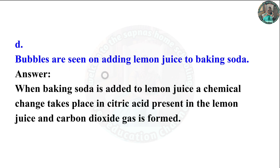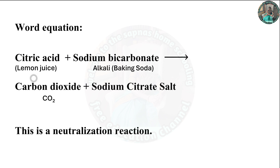Bubbles are seen on adding lemon juice to baking soda. When baking soda is added to lemon juice, a chemical change takes place; citric acid present in the lemon juice reacts and carbon dioxide gas is formed. Equation: citric acid + sodium bicarbonate → carbon dioxide + sodium citrate salt. This is a neutralization reaction.